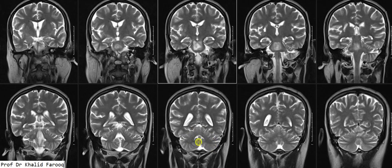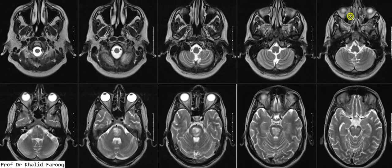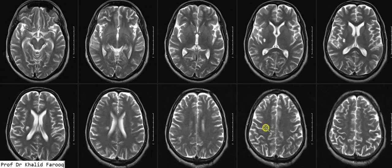Visualized portions of both cerebellar hemispheres are unremarkable with a normal vermis. This can be confirmed on axial images: pontine hemorrhage and ischemic changes in the posterior portion of the right basal ganglia extending cranially into the right periventricular white matter. The corpus callosum, lateral ventricle, third ventricle, and both thalami are unremarkable.